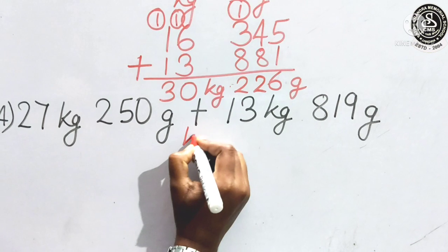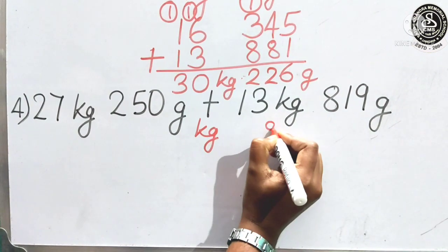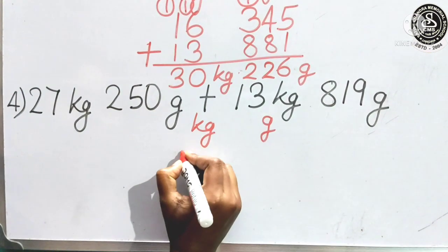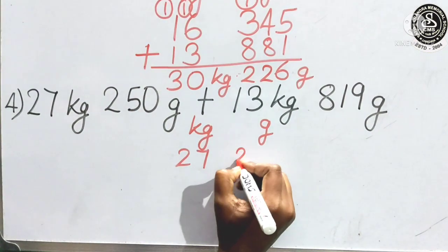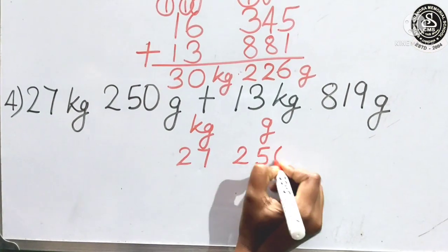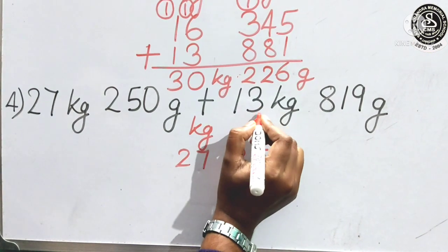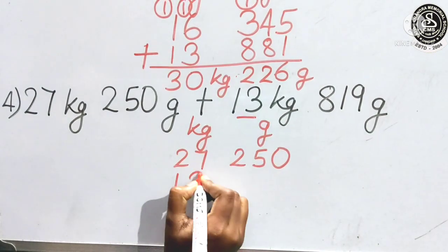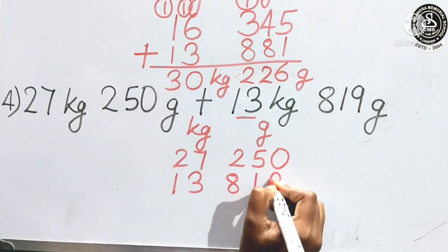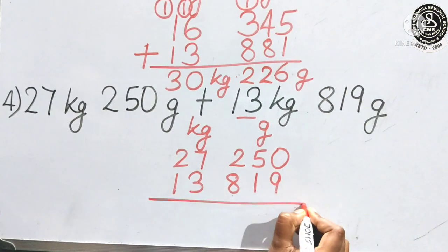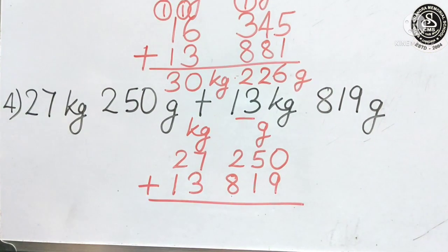As I have written. Arrange this one also. Now, here also. Kilogram. Gram. What is given in kilogram? 27. What is given in gram? 250. Now, here also. Kilogram. 13. And this side in gram? 819. Give the addition sign.